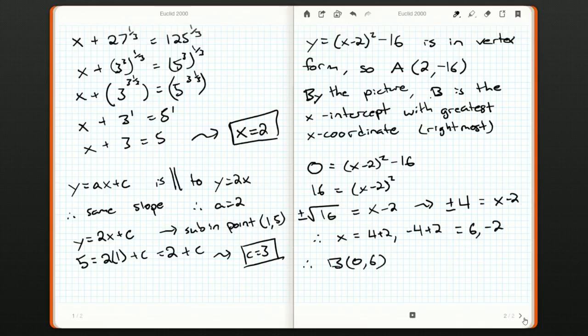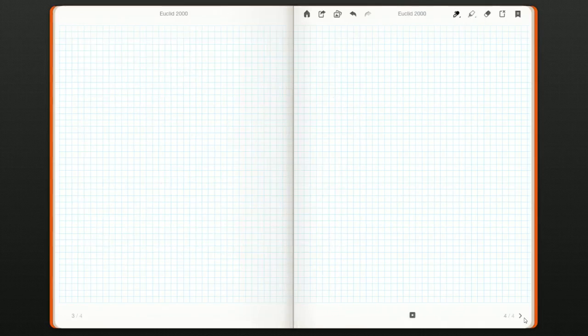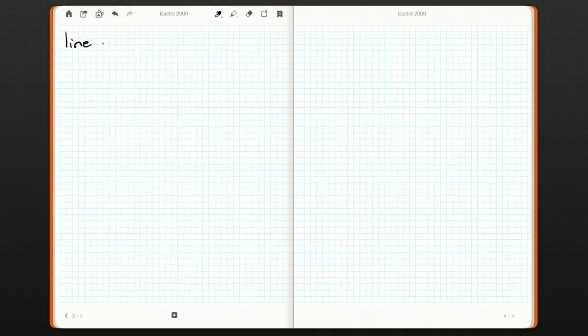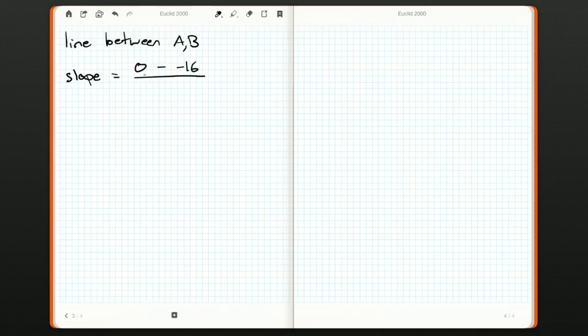We want the line between A and B. We want to figure out the slope. The slope is the rise over the run. So it's the y-coordinate of B, which is 0, minus the y-coordinate of A, which is negative 16, over the x-coordinate of B minus the x-coordinate of A, which is 2. So 0 minus negative 16, that's just a positive 16. 6 minus 2 is 4. 16 divided by 4 is 4.